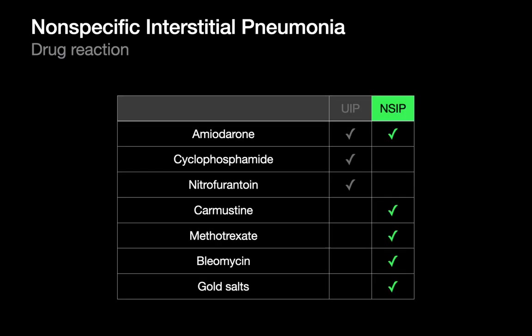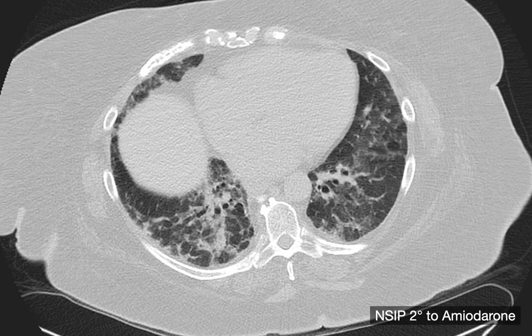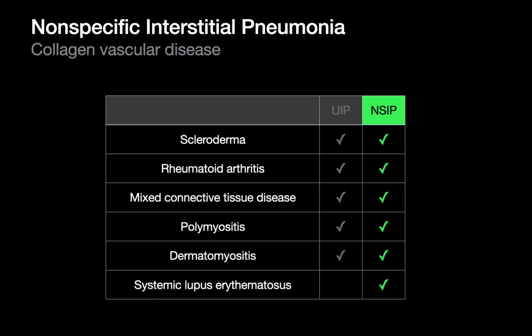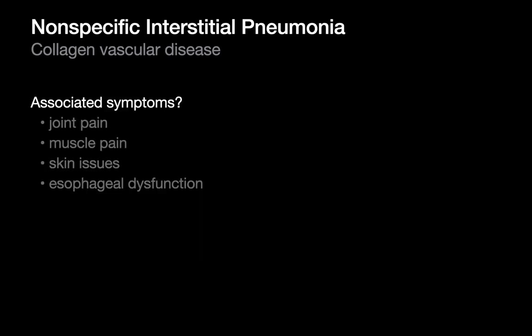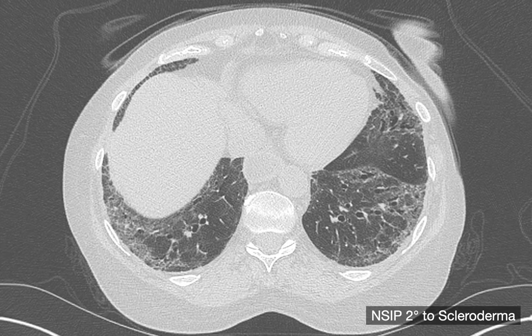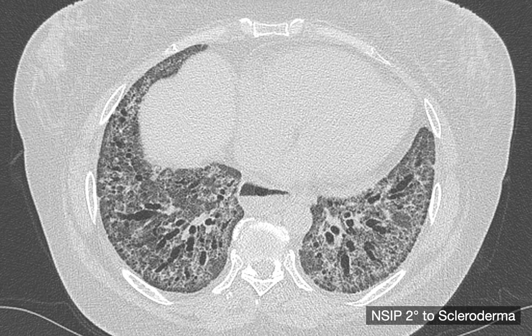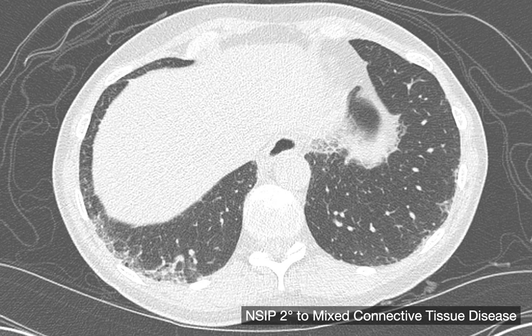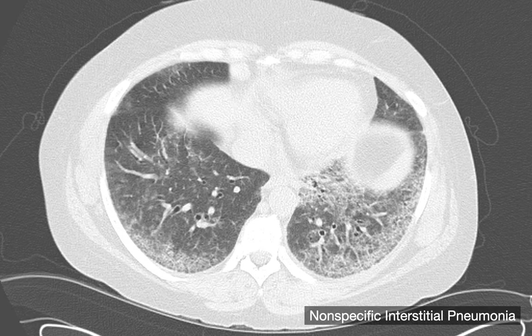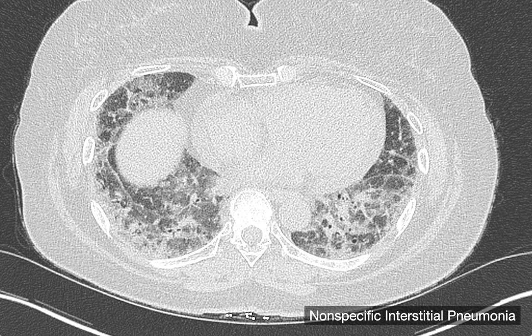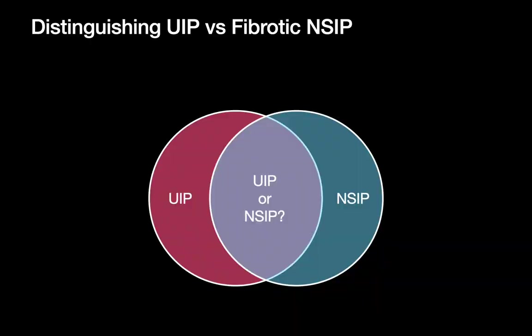Causes of NSIP include drug exposure — the drug irritates the lung and NSIP is the injury response in some people — and collagen vascular disease. Some nice examples show NSIP in collagen vascular disease patients with lots of reticulation and ground glass. Some NSIP cases will be labeled idiopathic. There's notable overlap between UIP cases and especially more fibrotic NSIP cases, with limited specificity to distinguish one from the other on imaging sometimes.